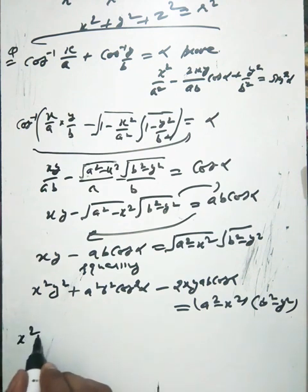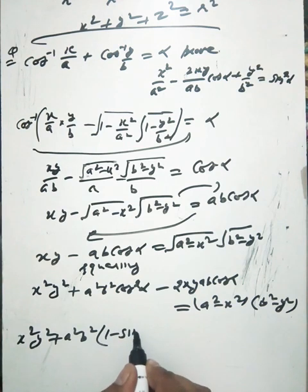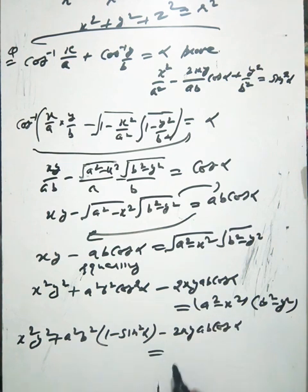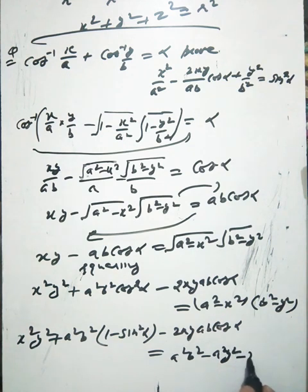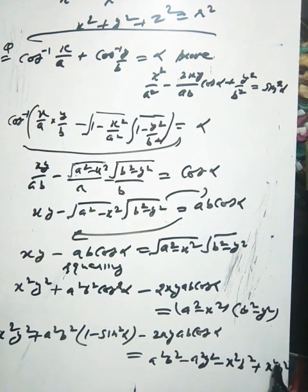Prove sin square alpha, a square b square minus a square y square minus x square b square equals x square y square. This is common, now cancel out to be a square b square. So this is one minus sin square alpha.